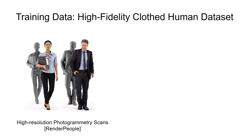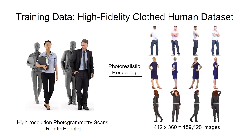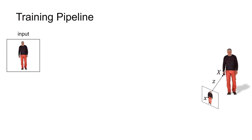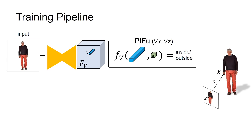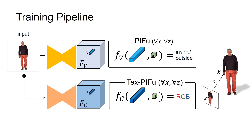We train PIFU with a high-fidelity clothed human dataset that we developed, where high-resolution 3D scans are photorealistically rendered with various angles and illuminations. For training, we train our surface reconstruction module consisting of the image encoder and PIFU that predicts the scalar probability field. Then we train our texture inference module consisting of another image encoder and TextPIFU that takes the geometry features to infer the color on the surface.